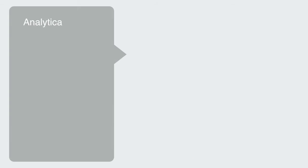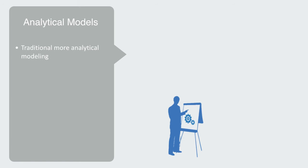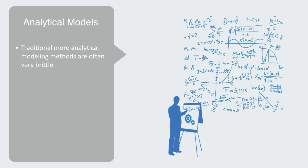This is classical systems thinking, and it can be a great value because our traditional, more analytical modeling methods are often very brittle. Meaning, because they are based on very quantitative methods, they are either exactly correct, or they give us figures that blind us to the overall trajectory.